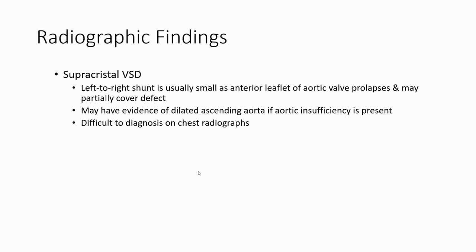For supra-cristal VSD, the shunt is usually small as the anterior leaflet of the aortic valve may prolapse and partially obstruct the defect. There may be evidence of a dilated ascending aorta if aortic insufficiency is present. Supra-cristal VSD is difficult to diagnose on chest radiograph.